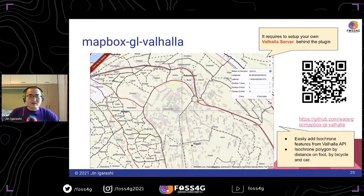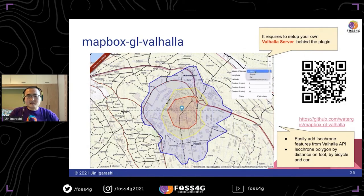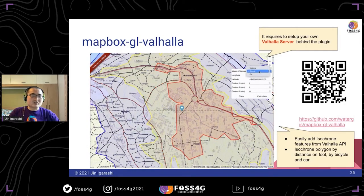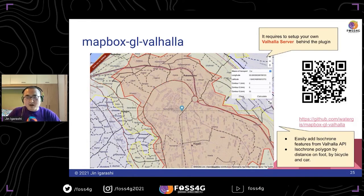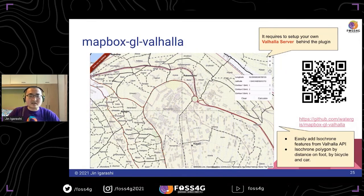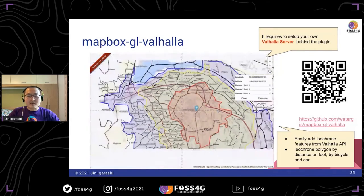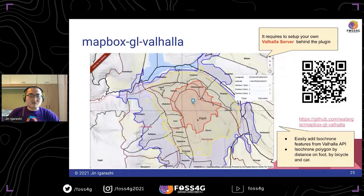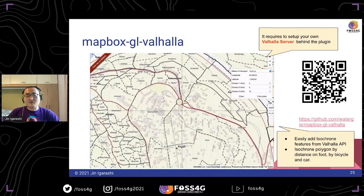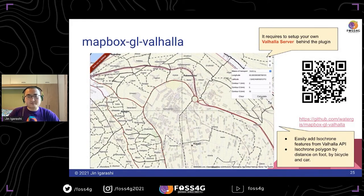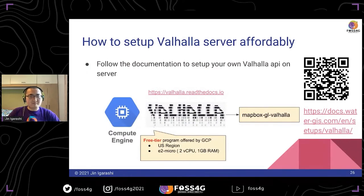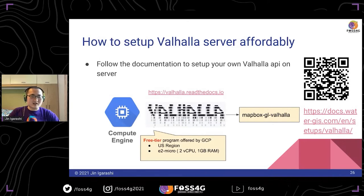Next, I developed the Valhalla Mapbox GL plugin. This plugin easily provides isochrone map features, and you can know the distance by bicycle, by car, or on foot. This is very useful for planning purposes or operation of water assets. You do need to set up your own Valhalla server, but there is a free tier program offered by GCP, so for small water utilities this free tier is enough — you can host Valhalla free of charge.